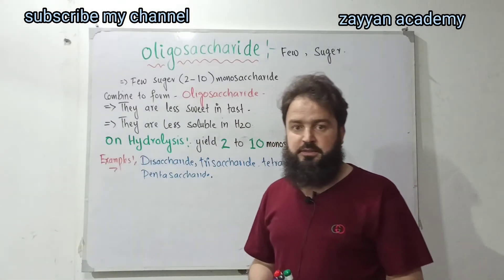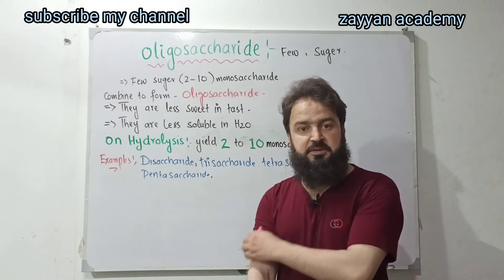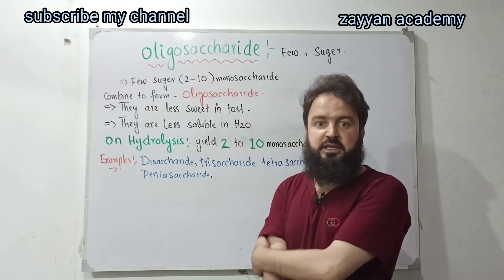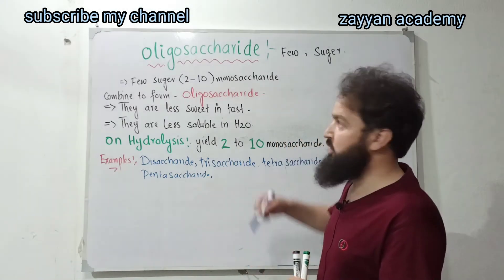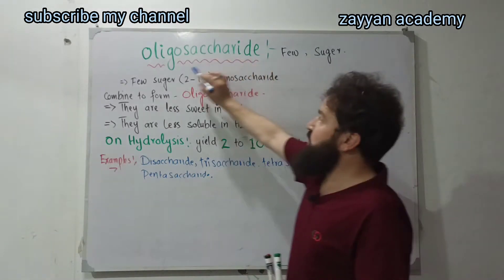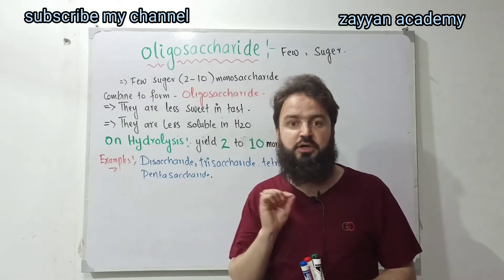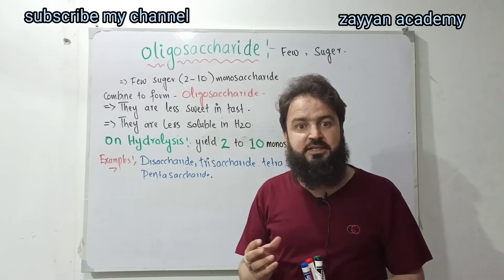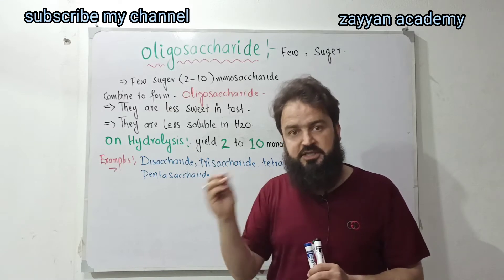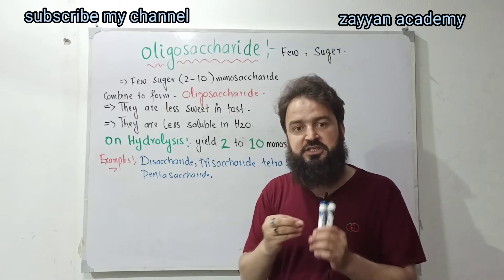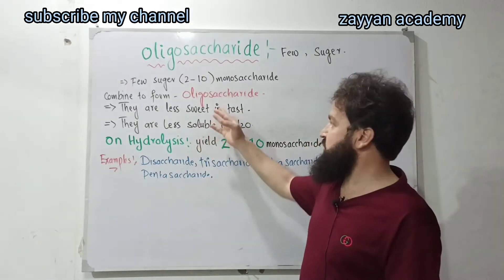Bismillahirrahmanirrahim. My name — this topic is Carbohydrate Classification. We are discussing Oligosaccharide. Oligo means few, and saccharide means sugar. If you have 2 to 10 monosaccharides combined, your large molecule is Oligosaccharide.